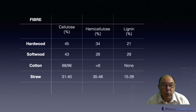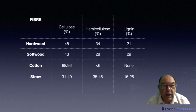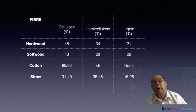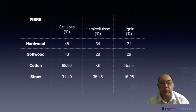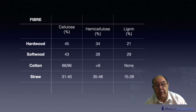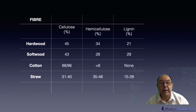Straw, as you can see, has up to about 40% cellulose and quite high lignin at 15 to 28%. But the reason that everyone wants to use straw is the hemicellulose content — 35 to 48%. Hemicellulose is a soluble material that assists fibre-fibre bonding and gives you a stronger sheet. However, straw has some really big problems because it contains high levels of silica, which makes it very difficult to dewater the fibre, and once you've made a sheet of paper from it, it becomes extremely abrasive.